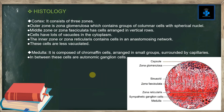Histology — Cortex: The cortex consists of three zones. The outer zone is the zona glomerulosa, which contains groups of columnar cells with spherical nuclei. The middle zone, zona fasciculata, has cells arranged in vertical rows, as you can appreciate here.